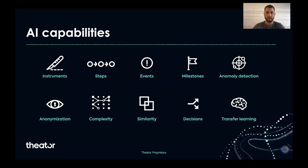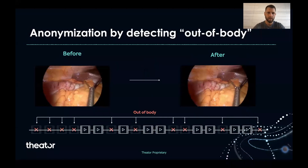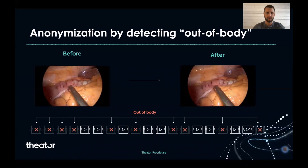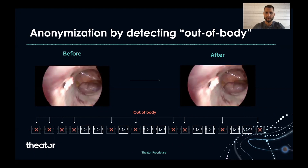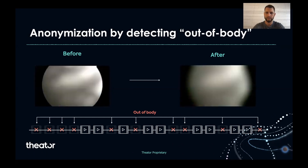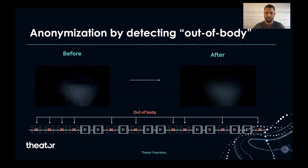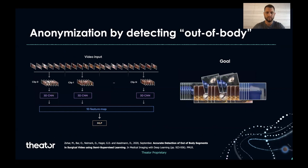Here are some examples of AI capabilities or specific tasks that we are interested in. I want to show two specific examples to put things in context. First, anonymization for de-identification. The goal is to take the raw video, which we see on the left, and using machine learning, detect when the camera is pulled out of the patient body and blur those frames. The model takes the entire video input, breaks it into small chunks represented by clips, processes them using a 3D component that gives us a feature map, and then uses a small MLP network to get the binary decision if this is an in-body or out-body frame.